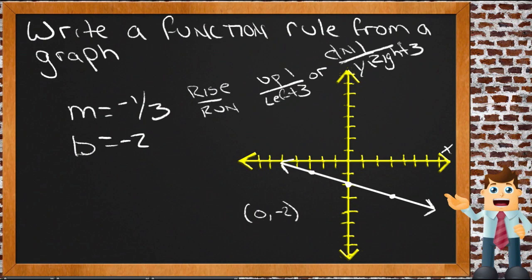So rise over run, and run by default goes to the right, so if it's a positive run, it goes to the right. In order to get a negative one-third, we either need a negative one divided by three, or a positive one divided by a negative three. So either we need a positive rise, which is up, and then a negative run, which means we'd go to the left, or we need a negative rise, which would be down, and a positive run, which would be going to the right.